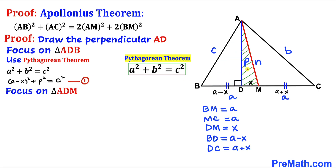Next, let's focus on right triangle ADM and again apply the Pythagorean theorem. Filling in the values, we get: x² + p² = n². Let's call this Equation 2.